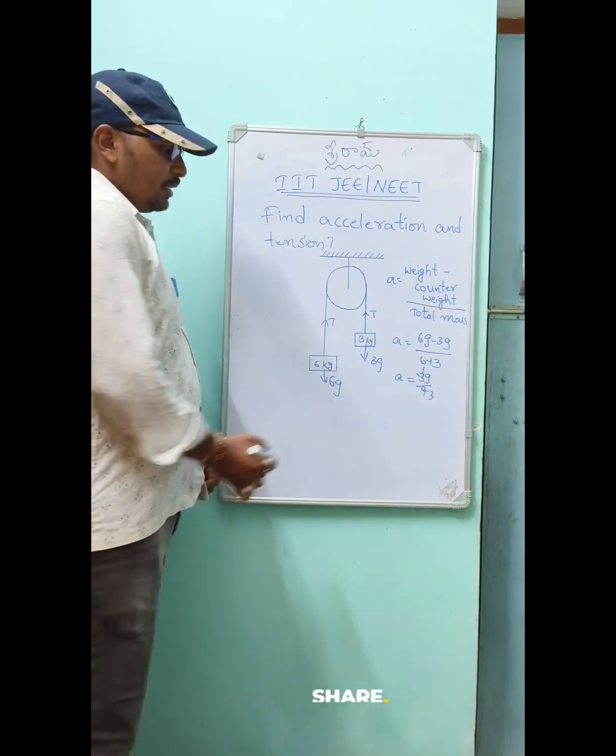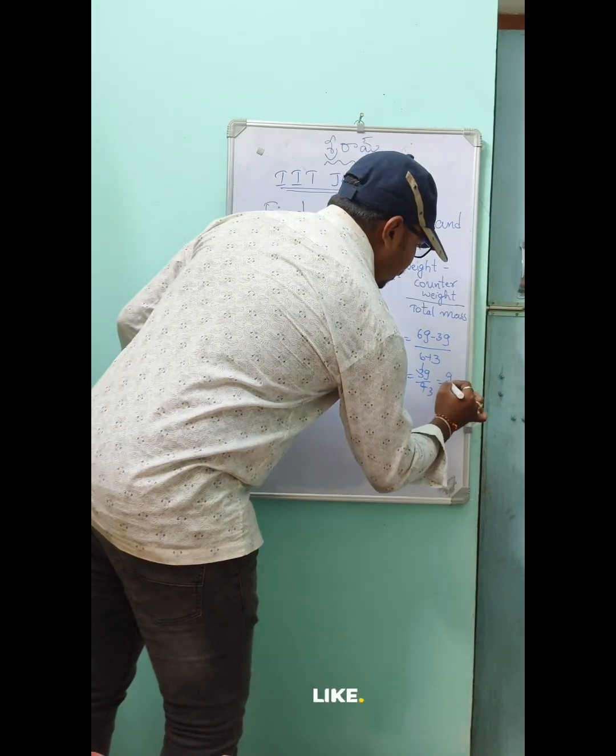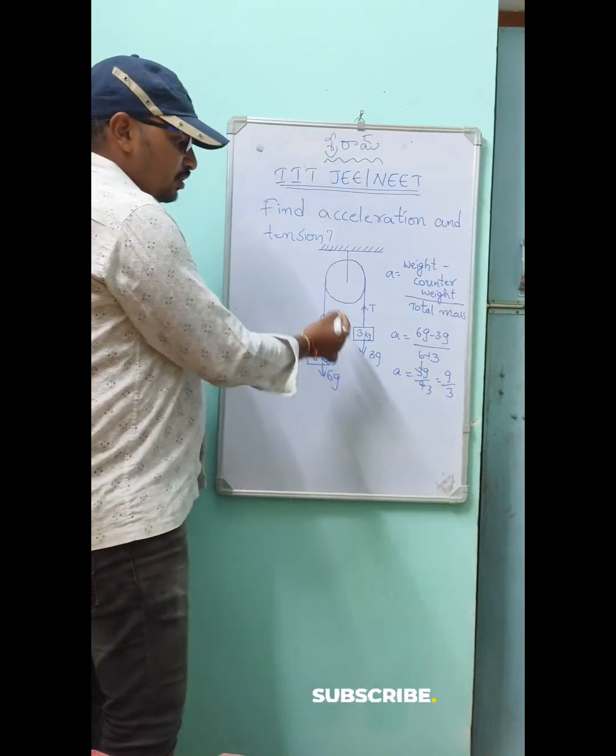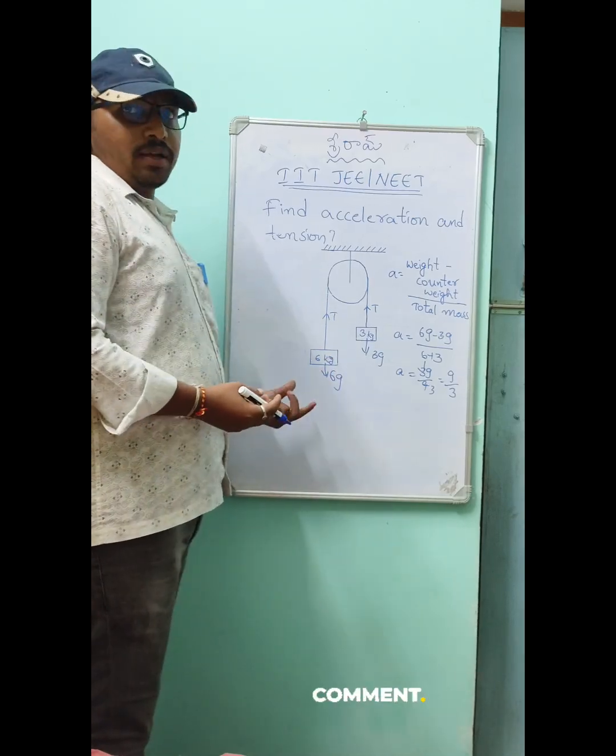The acceleration value is g by 3. Now to find the tension, I told you to find it by drawing a free body diagram.